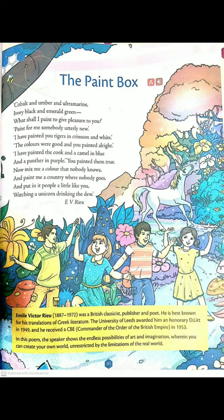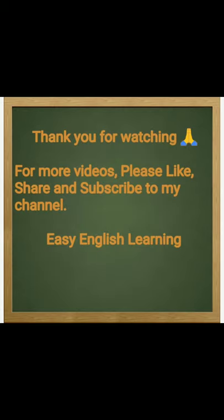So that was the poem. You can go through it, read the poem, and learn the word meanings — the different new colors like crimson for purplish red, cobalt for greenish blue, and so on. For more videos, please like, share, and subscribe to my channel. Thank you so much.